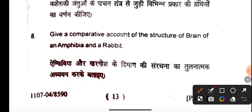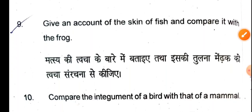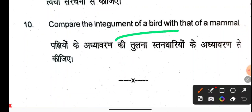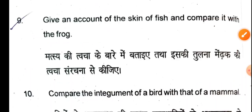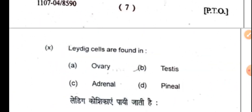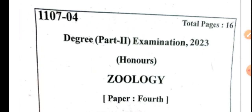Question number 7 was to describe the different types of glands associated with the digestive system. Question number 8 was to give a comparative account of the structure of the brain of an amphibian and a rabbit. Question number 9 was to give an account of the skin of fish and compare it with that of the frog. The last question was to compare the integument of a bird with that of a mammal. I hope you gave the examination very well. If you want the PDF of this question paper, the link to the Telegram channel is in the description box or first comment section. That's all — see you in the next session.